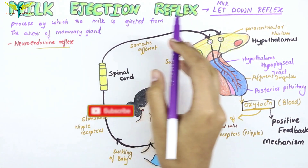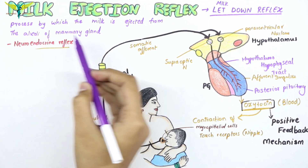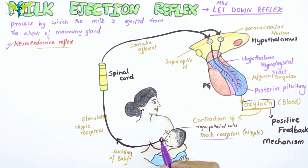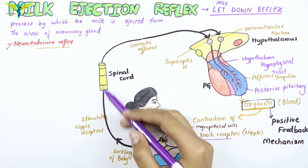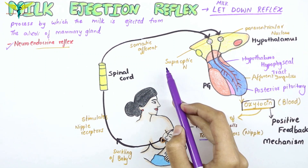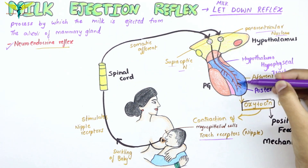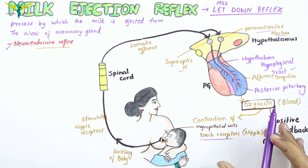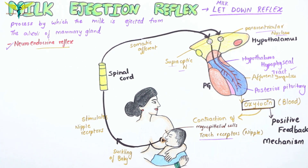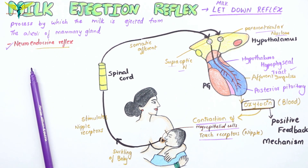In summary, the milk ejection reflex or milk let down reflex is the process by which milk is ejected from the alveoli of the mammary gland. It is a neuroendocrine reflex: suckling of the infant stimulates the nipple receptors, somatic afferent nerve fibers pass through the spinal cord and stimulate the paraventricular and supraoptic nuclei of the hypothalamus. The hypothalamus sends impulses to the posterior pituitary via the hypothalamo-hypophyseal tract, releasing a large amount of oxytocin into the blood. When oxytocin reaches the mammary gland, contraction of the myoepithelial cells leads to ejection of milk. If you like this video, do subscribe to the channel and check out recent videos and playlists.